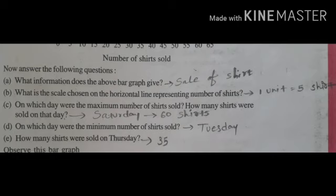On which day were the maximum number of shirts sold? Which day has the most selling? Look at the graph — which bar is the tallest? That is Saturday. That means on Saturday the maximum number of shirts were sold. How many shirts were sold on that day? You need to read the scale straight across to see which number it reaches — it comes up to 60, that means 60 shirts were sold on that day.